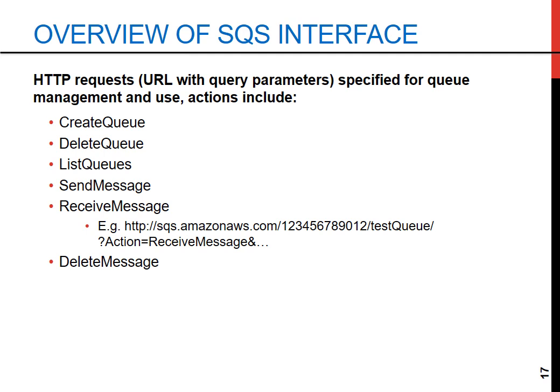The SQS interface operates through HTTP requests using URLs with query parameters. Key actions include: Create Queue and Delete Queue to manage the queue lifecycle; List Queues to retrieve all queues associated with an account; Send Message to add a message to a queue enabling asynchronous communication; Receive Message to allow a consumer to retrieve messages from the queue; and Delete Message to remove a message from the queue once processed, ensuring it won't be re-delivered.